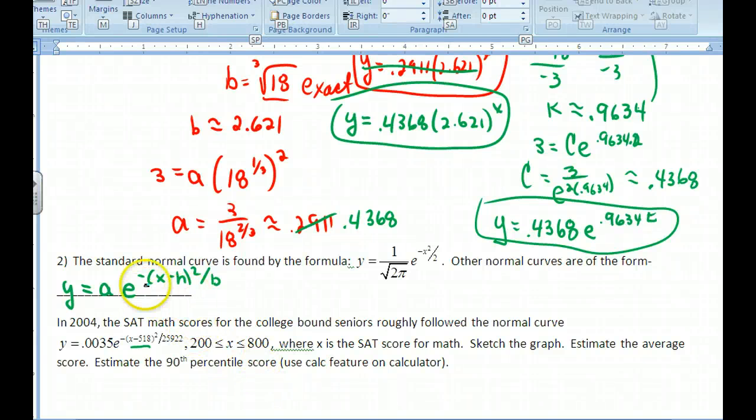Okay, continuing with this problem, the standard normal curve is found by this equation, and other normal curves are found by this one. SAT scores can be normalized. In fact, many of them are. So if you take this equation and put it in your calculator, you probably want to pause, put this into your calculator, and see if you can get a good window.